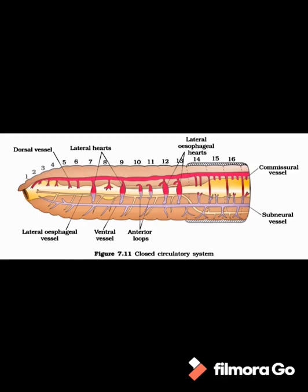The heart in earthworm is a total of four pairs — two pairs of lateral hearts and two pairs of lateral esophageal hearts. One pair of lateral hearts is present in segment number 7th and another pair in segment number 9th. The first pair of lateral esophageal hearts is in segment number 12th and another pair in segment number 13th. Two anterior loops are present, one each in segments 10 and 11. Blood glands are present in segments 4th, 5th, and 6th, responsible for production of blood cells and hemoglobin. The blood cells are phagocytic in nature, and hemoglobin is present in dissolved form in the plasma.